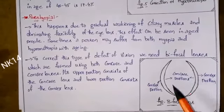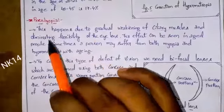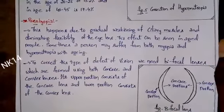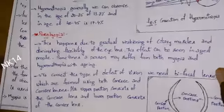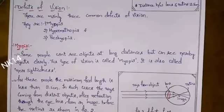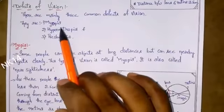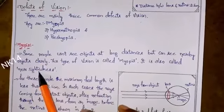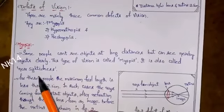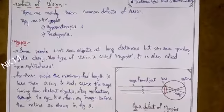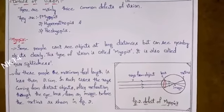To summarize: we have three types of defects — myopia, hypermetropia, and presbyopia. Myopia is also called nearsightedness because the person can see objects at near distance but cannot see at long distance. This normally occurs in teenagers and school-age students.